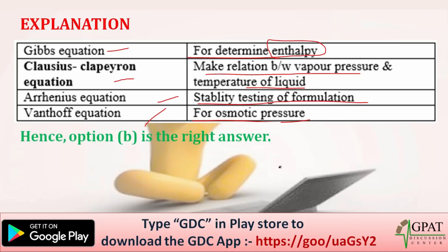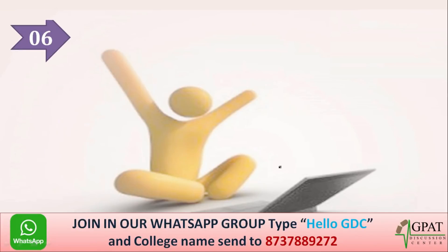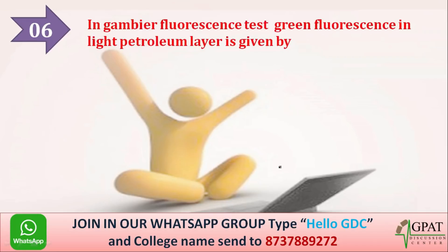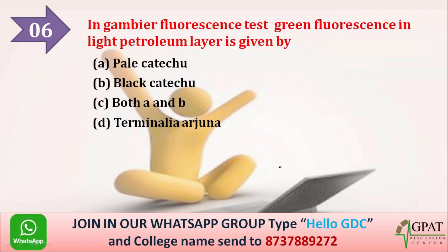Next question — from the 2019 pharmacy exam, pharmacognosy section: in the Gambier fluorescence test, green fluorescence in the light petroleum layer is given by? Option A: pale katechu. Option B: black katechu. Option C: both A and B. Option D: Terminalia arjuna. The correct answer is pale katechu.